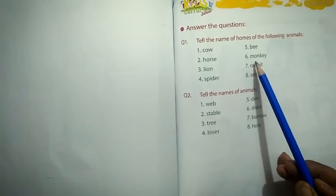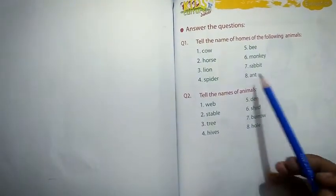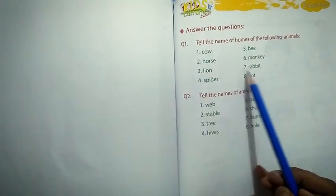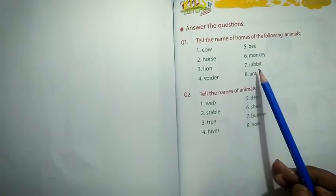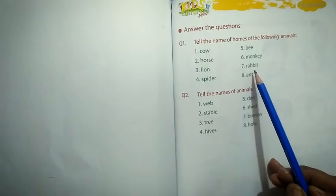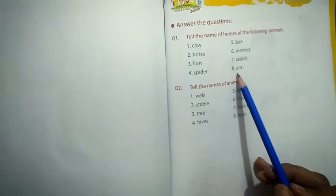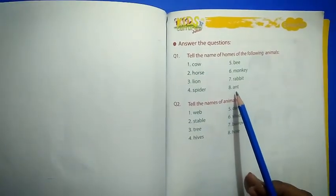Hive. Number 6: Monkey. Monkey lives on a tree. Tree. Number 7: Rabbit. Rabbit lives in a burro. Rabbit lives in a burro. Number 8: Ant. Ant lives in a hole. Ant lives in a hole.